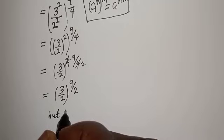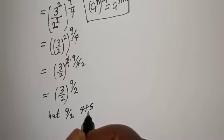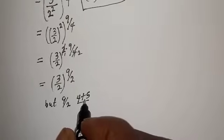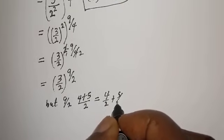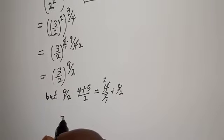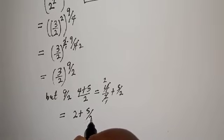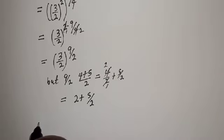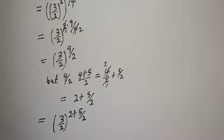Now 9/2 can be written as 4/2 plus 5/2, which equals 2 plus 5/2. So (3/2)^(9/2) is equal to (3/2)^(2 + 5/2).